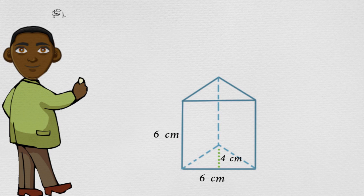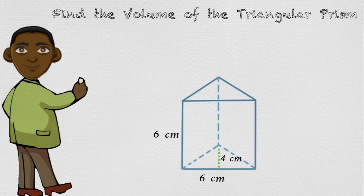In this problem, we're asked to find the volume of the triangular prism below. They're asking for us to find the volume in cubic centimeters. So we are looking for the solution as to how many cubes that are a centimeter in length and width can fit inside the triangular prism.